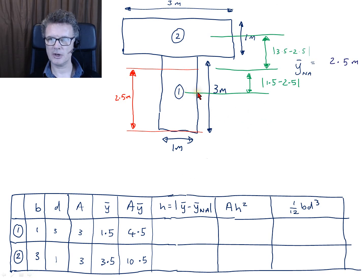We know our centroid for this lower one is at 1.5, and the middle section is at 2.5, so the distance from here to here is 1. For this one here, the neutral axis for the entire section is at 2.5, and the centroid for this position is 3.5, so 3.5 minus 2.5 equals 1. Our h's are simply going to be 1 and 1.